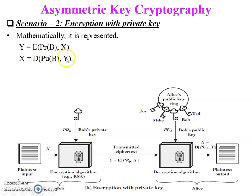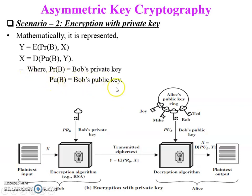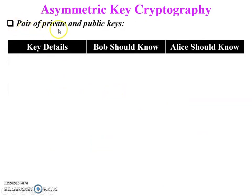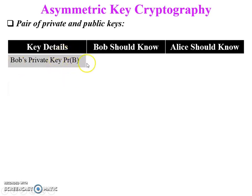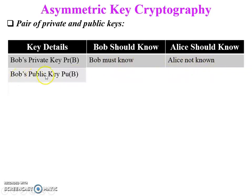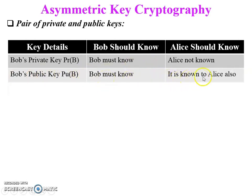Mathematically for scenario one: E(PU_A, X) = Y (encryption using Alice's public key on plain text X produces ciphertext Y). For decryption: D(PR_A, Y) = X (using Alice's private key on ciphertext Y produces original plain text X). Here PU_A is Alice's public key and PR_A is Alice's private key.